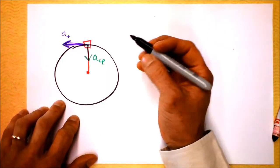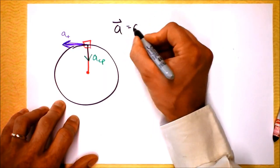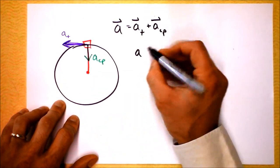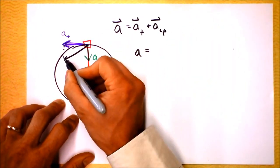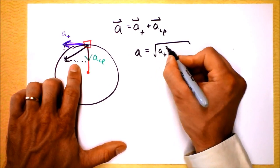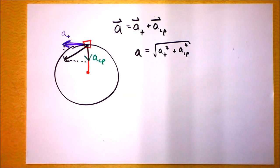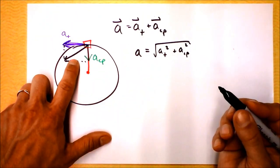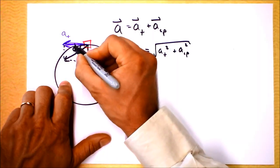The full vector acceleration is the tangential acceleration plus the centripetal acceleration. Since these two components are perpendicular, we can form a right triangle and use the Pythagorean theorem: the magnitude of total acceleration equals √(a_T² + a_CP²).